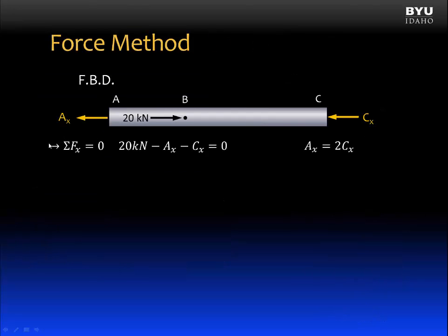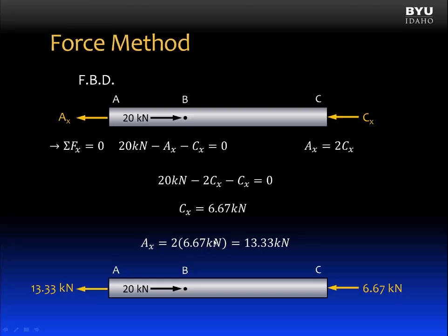Now, using the equation of static equilibrium that we found before, we can substitute in this value for AX is equal to 2 CX. And solve for CX is equal to 6.67 kilonewtons. Plug that back into this equation here, solve for AX, and we get AX is equal to 13.33 kilonewtons. The same answer we got using the force method. And the problem is complete. And we're done.